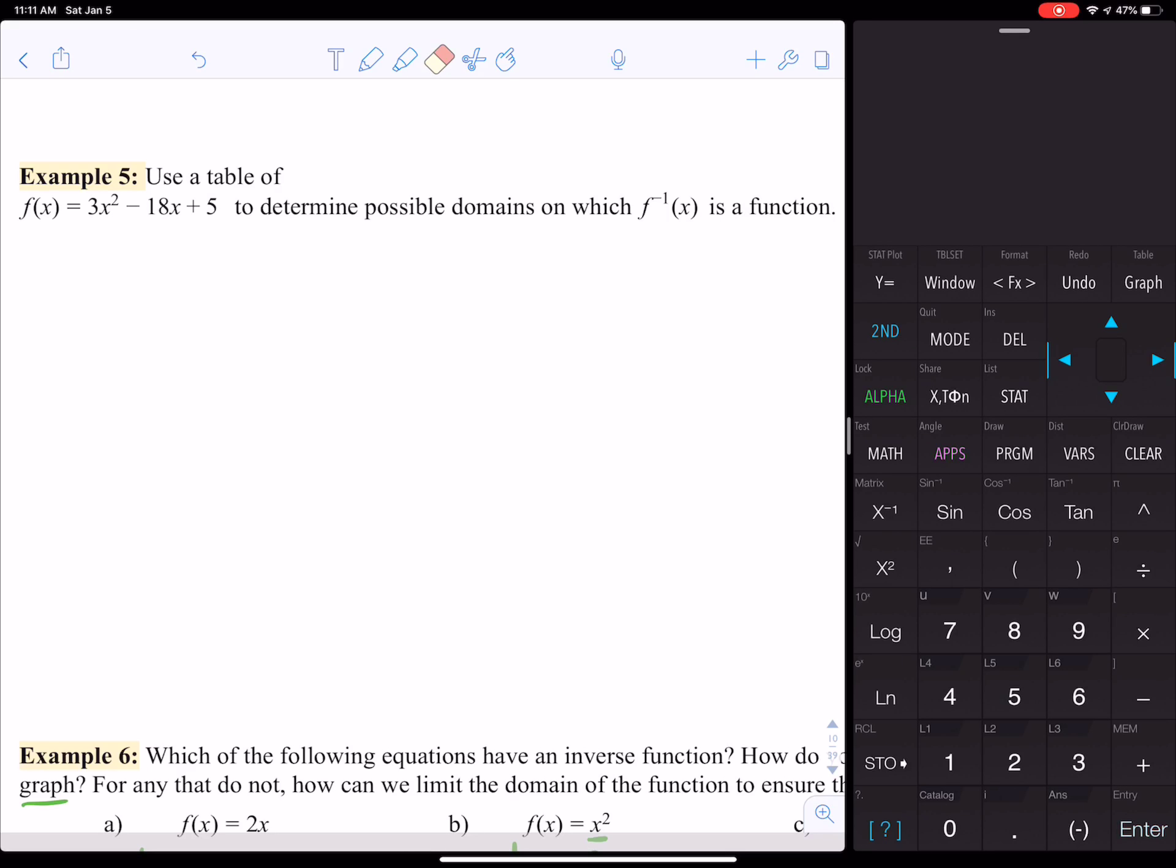Example 5 says use the table of f(x) = 3x² - 18x + 5 to determine possible domains of which the inverse function is a function. So we're still looking at this same concept about inverses right now.